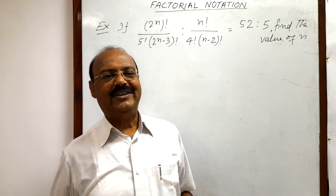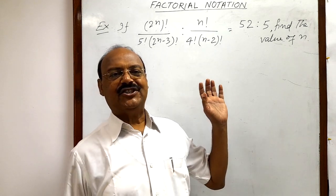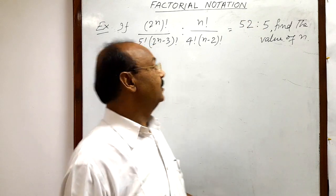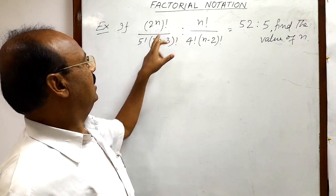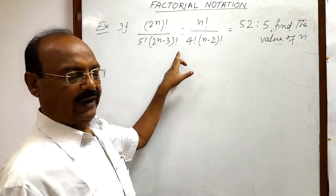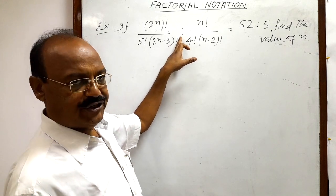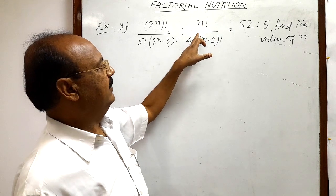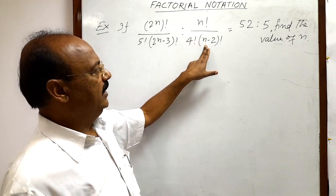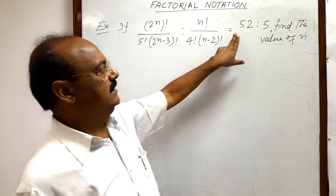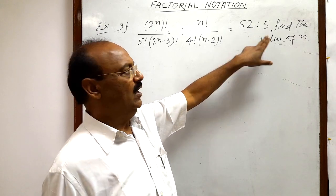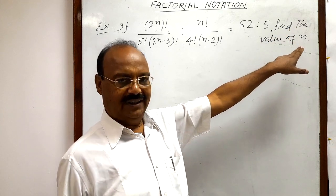Welcome students. Today we are going to discuss a very interesting question from the topic factorial notation. The question is: (2n)! divided by 5! times (2n-3)! is in ratio to n! divided by 4! times (n-2)!, and this equals 52 to 5. We need to find the value of n.